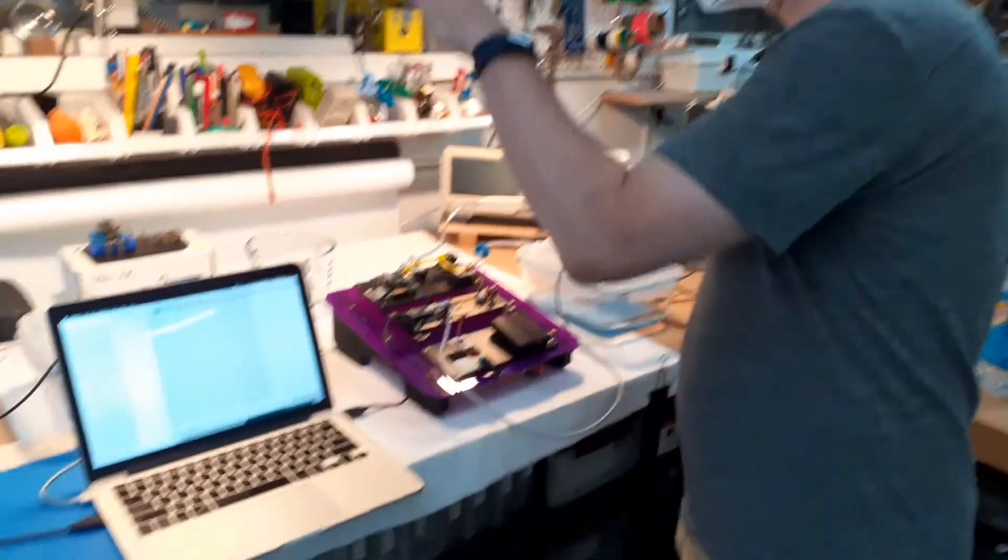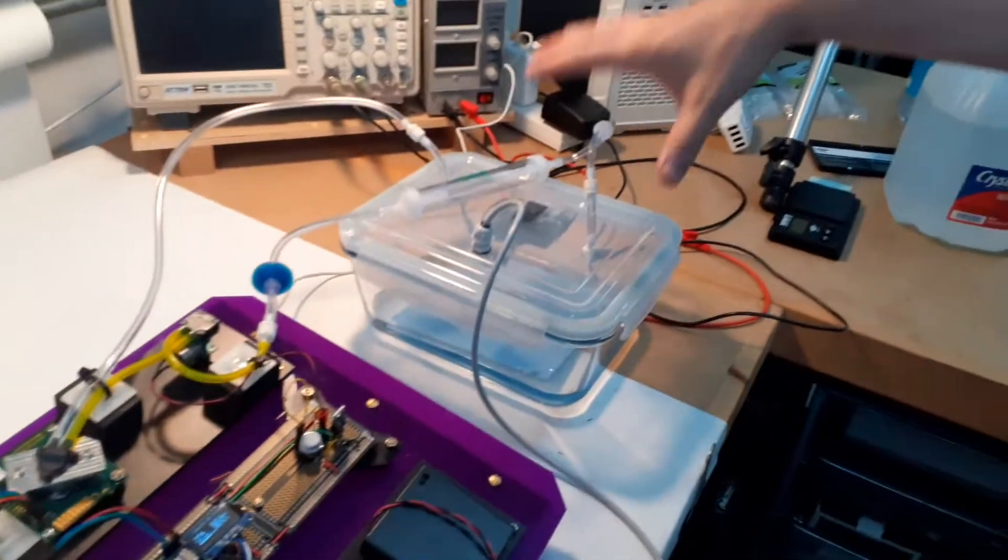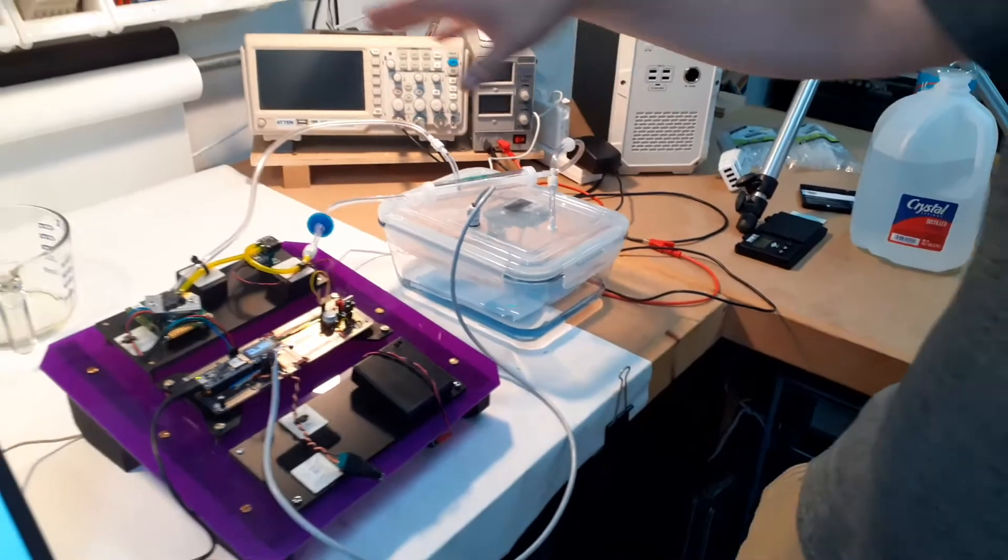Right now what we're doing is we have two sorbent testers going. Which ones are those? This one and this one. These are two sorbent testers. This is the more advanced, more complicated one. This is a simplified version, but we decided the simplified version was good enough for our purposes.